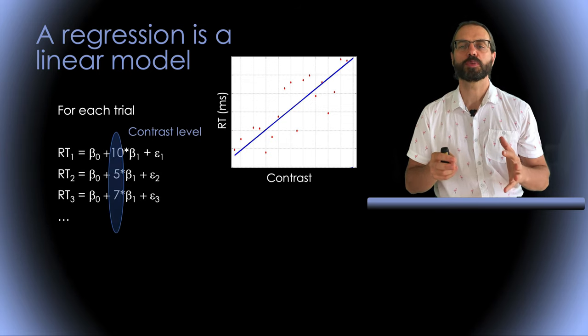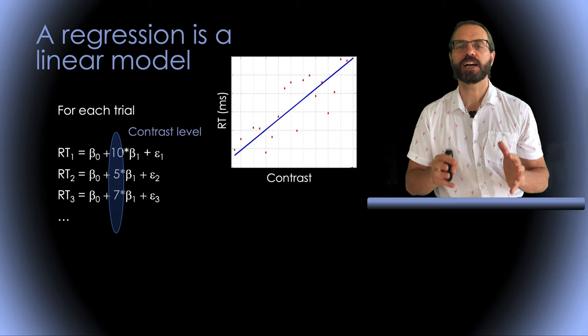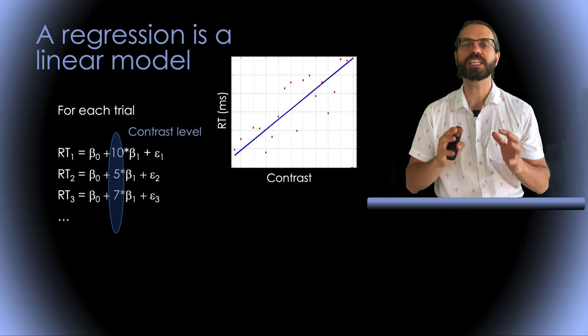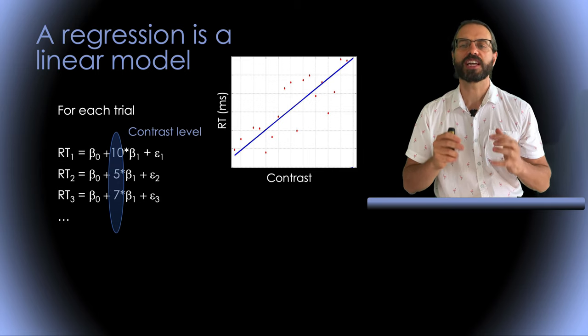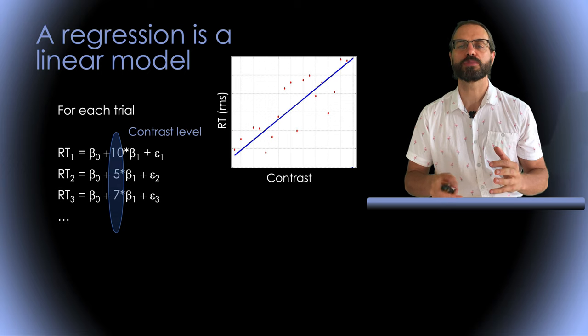Here is another representation of this model. For each trial we have a different error and we try to minimize this error. Now to test if the model is useful we can compute significance.